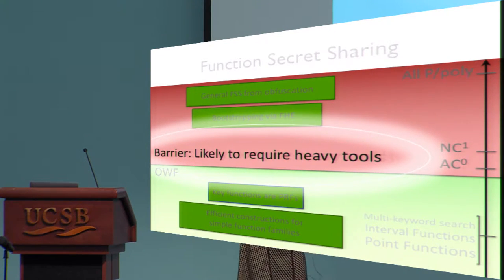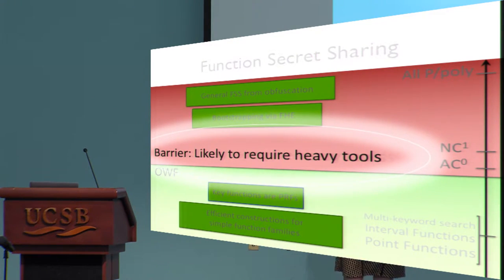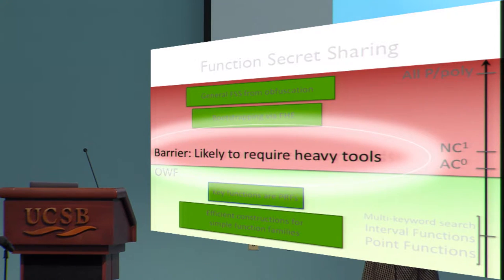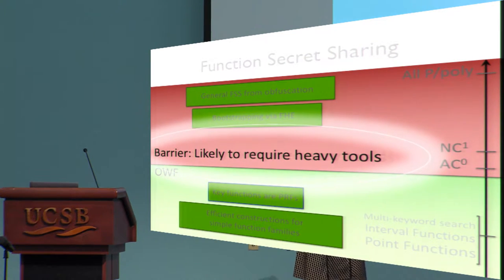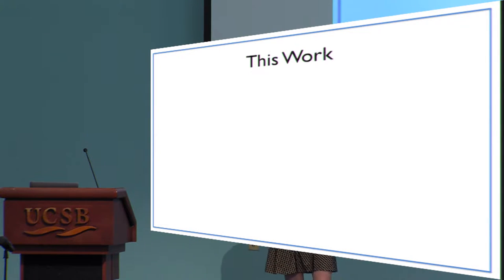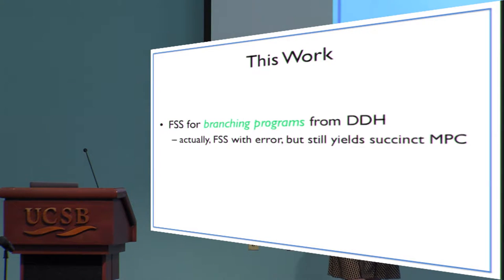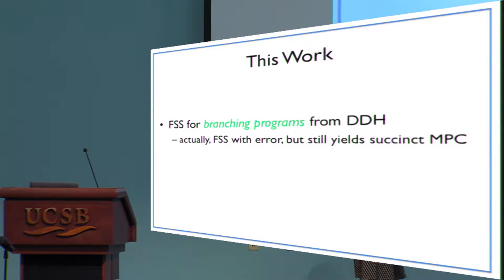We took this as a negative result, as some sort of barrier — essentially, if you wanted to build this kind of function secret sharing, you'd probably need to use something like fully homomorphic encryption. I'm happy to report that in this work, we essentially turned the tables on this negative result by constructing exactly this notion of function secret sharing, based not on fully homomorphic encryption, but based just on standard decisional Diffie-Hellman.